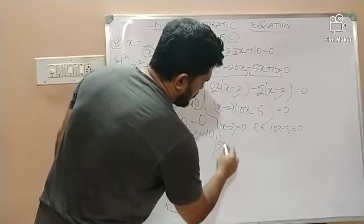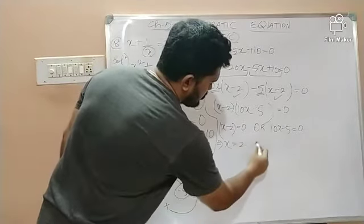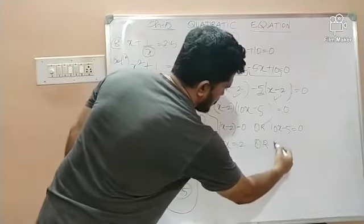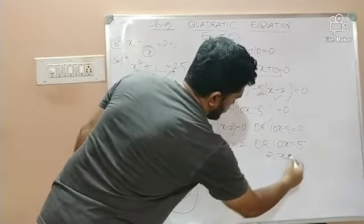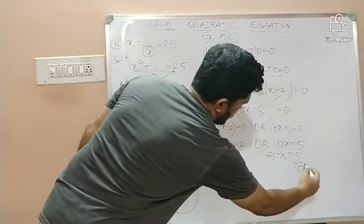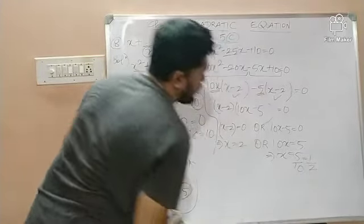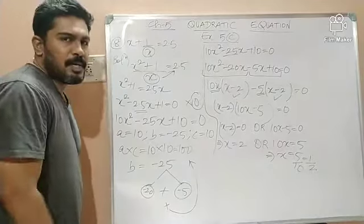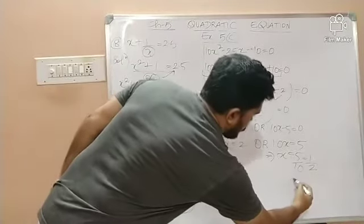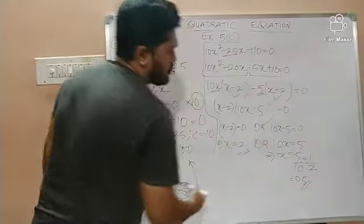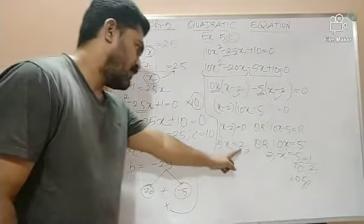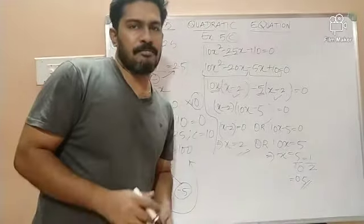So, if x minus 2 is 0, it implies x is equal to 2 or if 10x minus 5 is 0, it means 10x is equal to 5. So, it implies x is equal to 5 by 10, which is 1 by 2. Again, 1 by 2 is a fraction. If you want, you can write it as 0.5. So, which are the two values? 2 and 0.5.